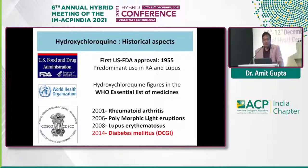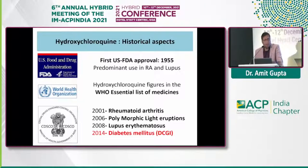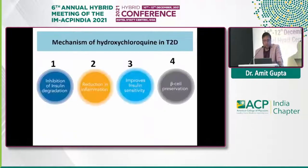The predominant use of HCQ is in rheumatoid arthritis and lupus. It is also one of the drugs on the WHO essential medications list. Key approvals include: 2001 for rheumatoid arthritis, 2006 for polymorphic light eruptions, 2008 for lupus erythematosus, and 2014 DCGI approval for diabetes mellitus.